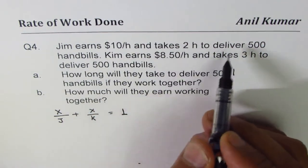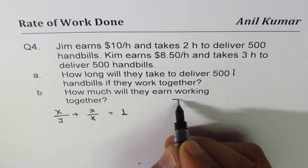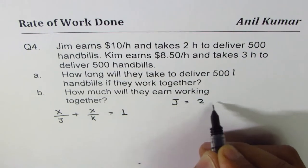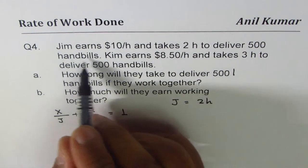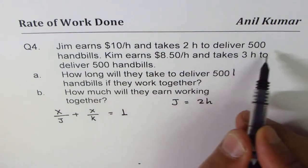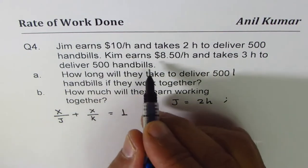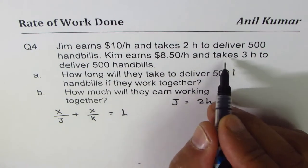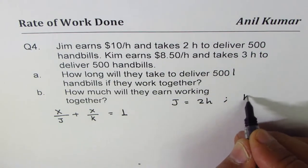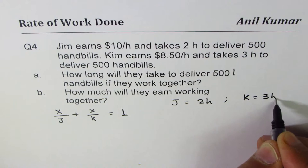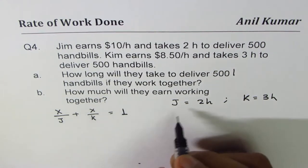j takes two hours to deliver. So in this equation, j is two hours to do the whole job. And Kim earns this much, however he takes three hours. It's a time. So Kim is three hours to do the whole job. That's Kim.